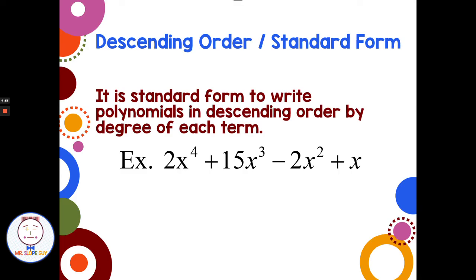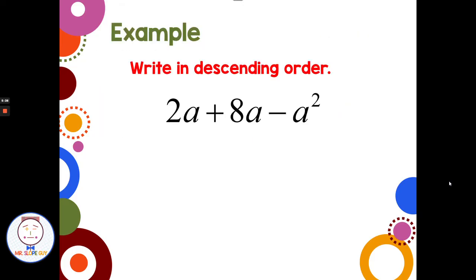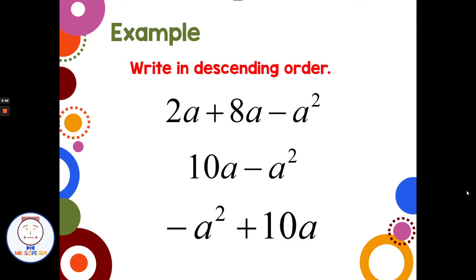Descending order and standard form are used interchangeably — they mean writing your polynomial in descending order by degree. For example, degrees of four, three, two, one are already in descending order. When combining like terms first: 2a + 8a = 10a, giving degree 1, while negative a² has degree 2. So we rearrange to -a² + 10a, keeping the negative sign with the a² term.